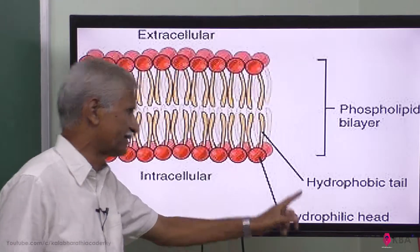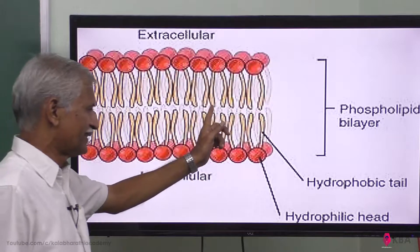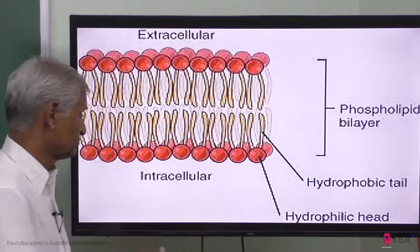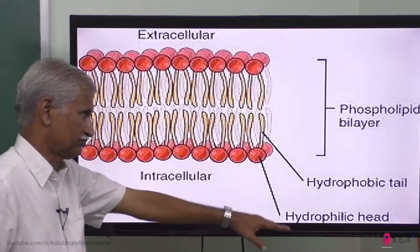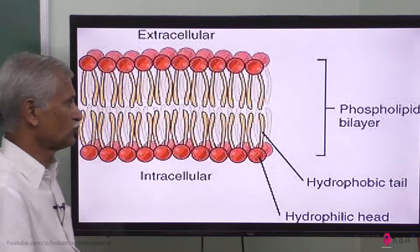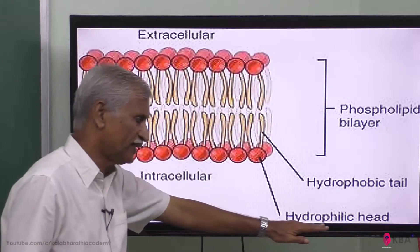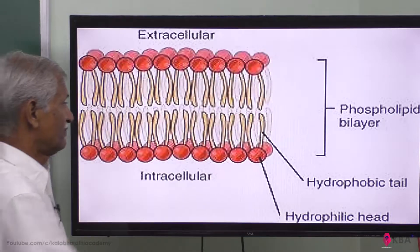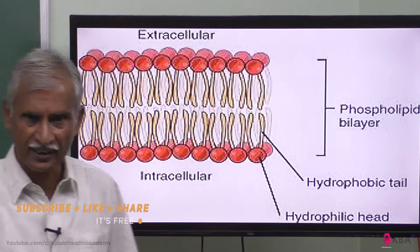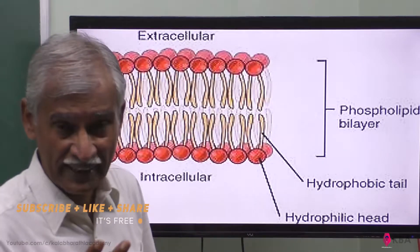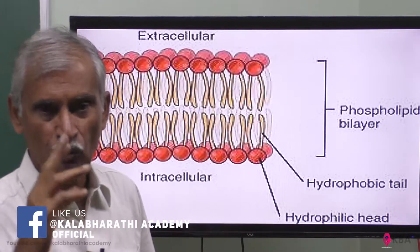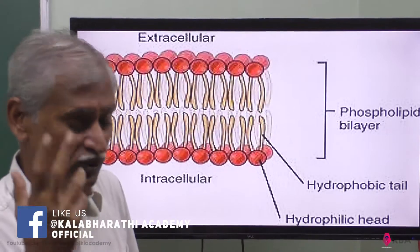The head end is hydrophilic and the tail end is hydrophobic. In the cell membrane, the inside intracellular layer has the head end, and the extracellular outside also has the head end. So both sides are hydrophilic heads, but in the middle where the tails meet, it becomes hydrophobic. This is the structure and function — because of this structural nature, fluidity and selective permeability in the membrane are due to phospholipids.